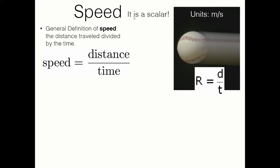Speed does not have direction — it is a scalar, and it cannot be negative. So if you tell me your speed is 35 miles per hour, that's fine, even if you're not using SI units. But if you say your speed is negative 35 miles per hour, I'm going to have a problem with that, because speed cannot be negative. It is a scalar.